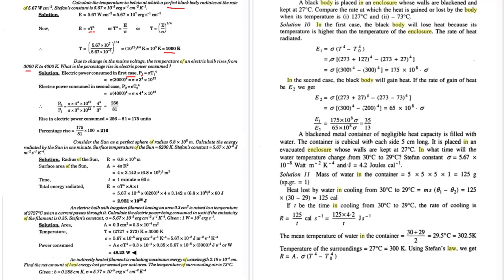Power per area equals Stefan's constant times T to the power 4 — like the other cases, in watts per centimeter squared. We have Stefan's constant, and the first temperature T1 = 3000 K, then in the second case T2 = 4000 K. So we have the power consumed at the second case and power consumed at the first case. We find the ratio between P2 and P1.